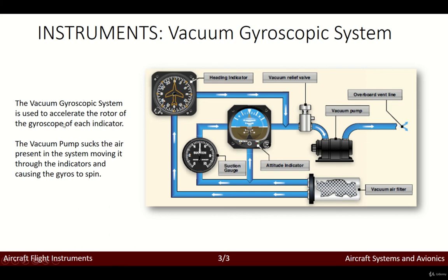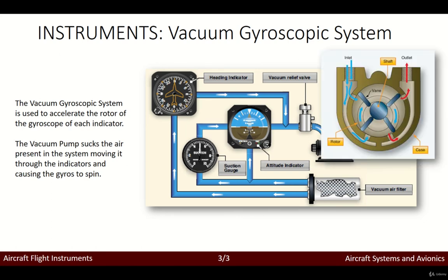The vacuum gyroscope system is used to accelerate the rotor of the gyroscope in each indicator — each indicator has its own gyroscope accelerated through the vacuum system. It is through the vacuum pump that sucks the air present in the system, which moves the gyros in the indicators and provides the spin, giving the stability and gyroscopic effect we mentioned before. This is just to give you an idea of what the vacuum pump looks like — the idea is that we take all the air in the system and move it constantly to keep all the rotors in the gyroscopes in each indicator fully functioning.